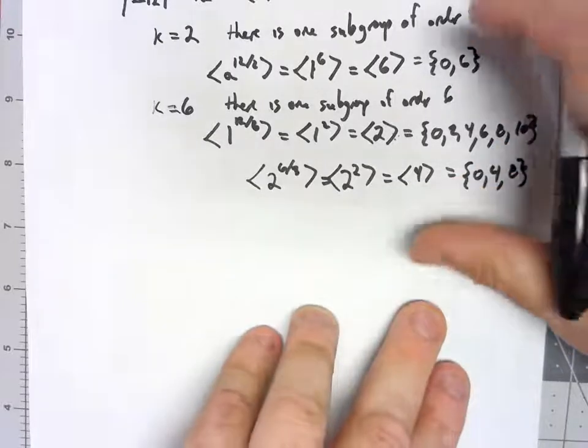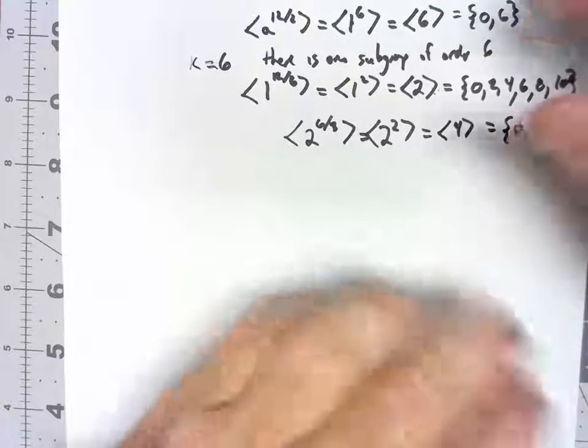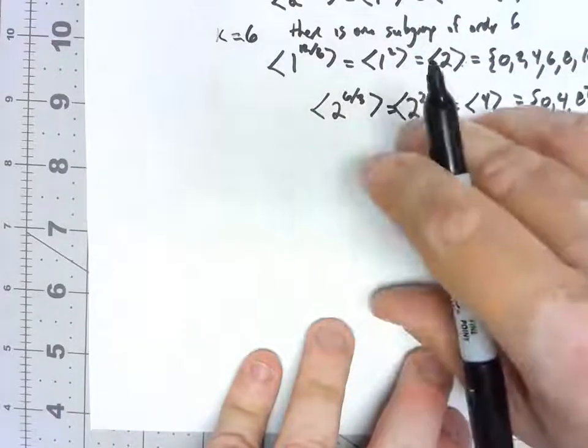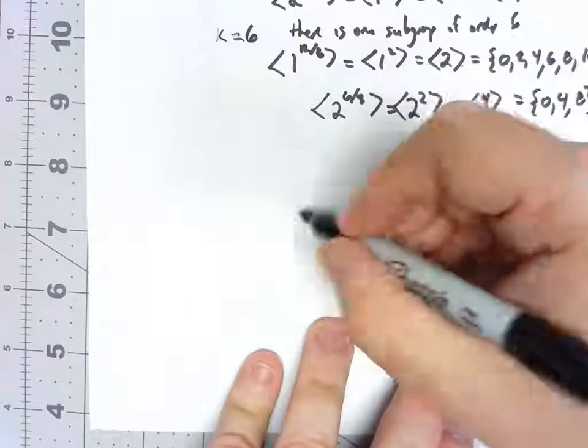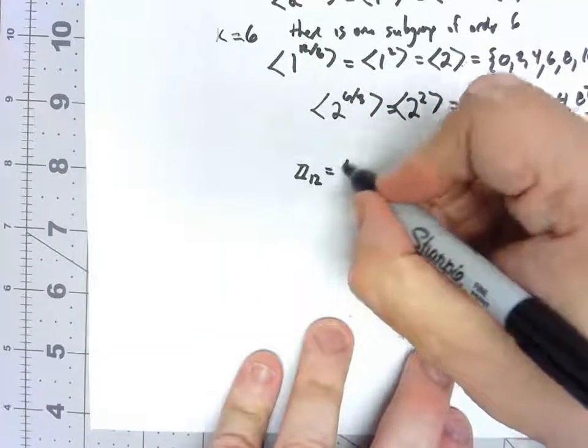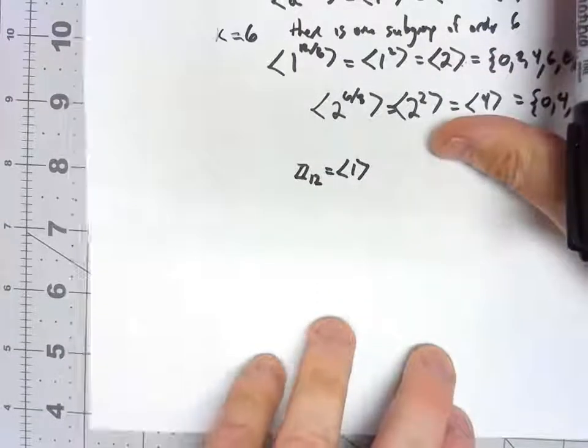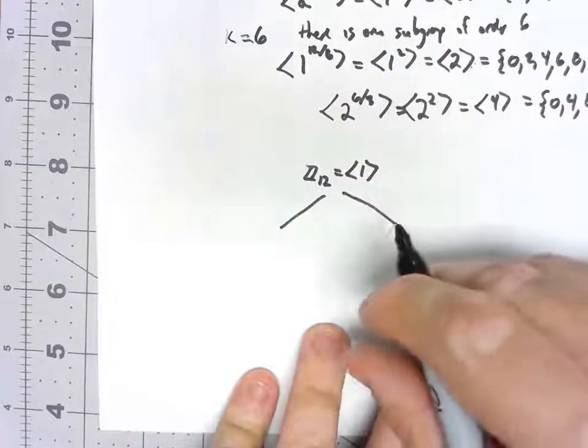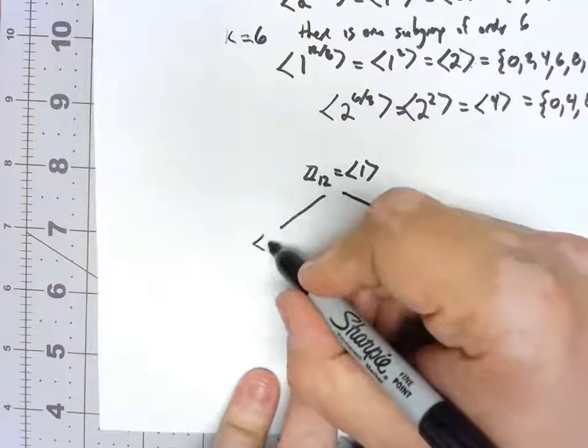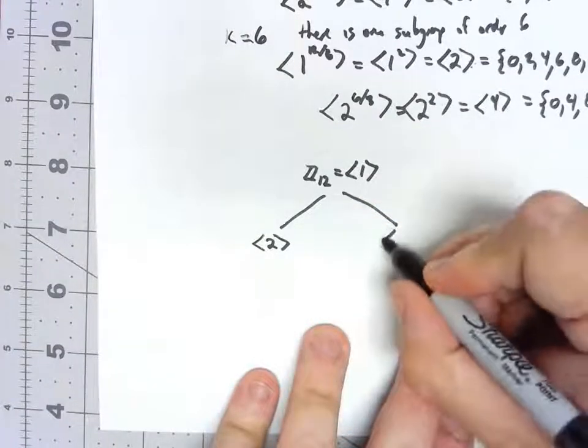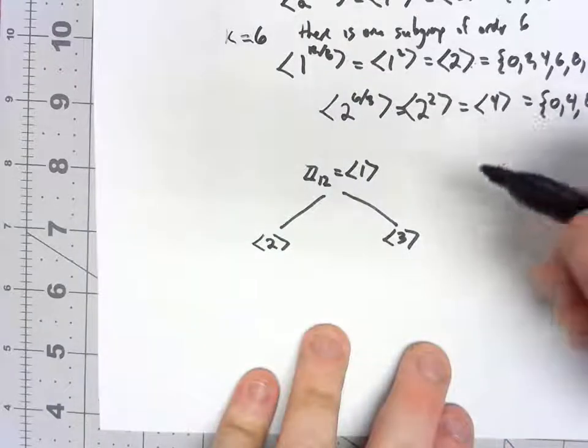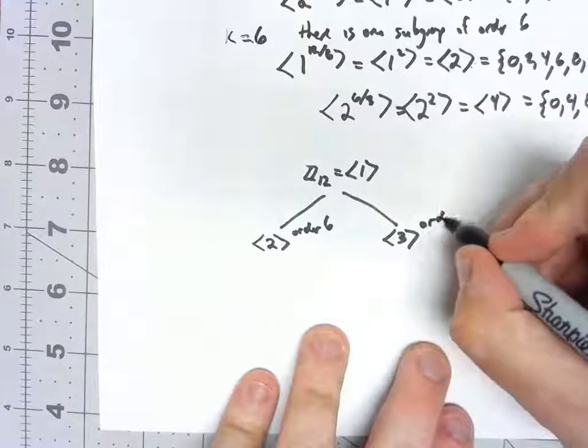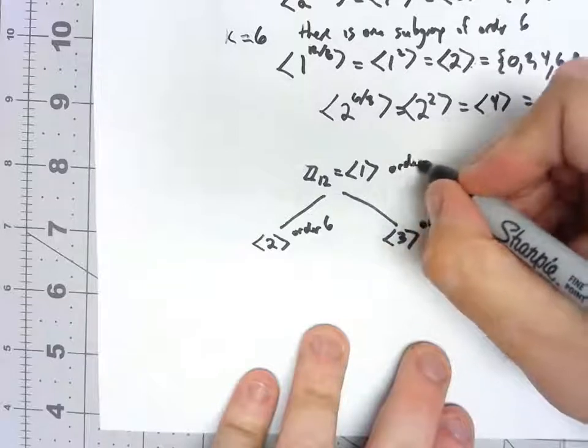What this kind of leads us to is that for at least a finite group, we can kind of put a ranking of subgroups. The full group is Z12, or the subgroup generated by 1. That has subgroups, well there are several subgroups, but I'm specifically going to focus on two of them. The subgroup generated by 2, and the subgroup generated by 3. This has order 6. This has order 4. The original has order 12.